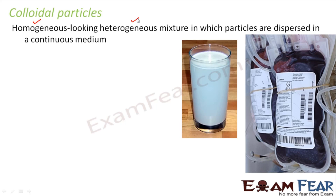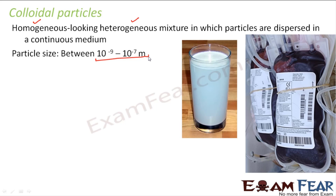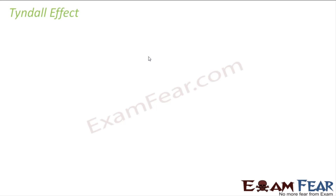A common example of a colloid is milk. When you look at a glass of milk it appears homogeneous, but using a powerful microscope you can see the particles inside — so we call it a colloid, not a heterogeneous mixture. Another example is blood, which also looks uniform and homogeneous but is actually heterogeneous. The size of colloidal particles is extremely small, in the range of 10⁻⁹ to 10⁻⁷ meters.